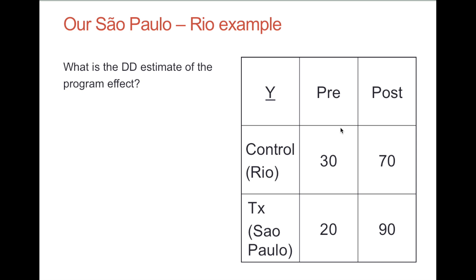Note that we observe test scores increase by exactly 70 in Sao Paulo, but they increased by 40 in Rio. And so if we think that they would have increased by about 40 already in Sao Paulo no matter what, then we can compute a diff-in-diff estimate, which is going to be the change over time in Sao Paulo minus the change over time in Rio, which is going to be an increase of 30 points on this math test.